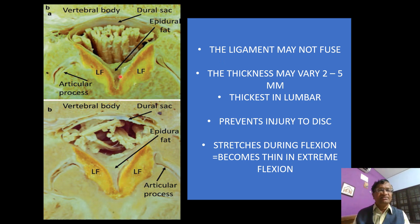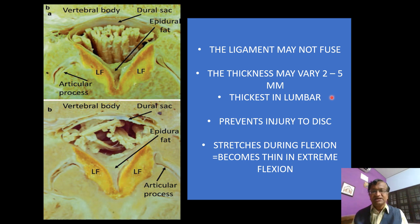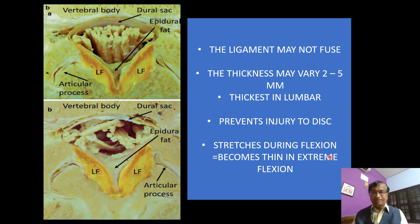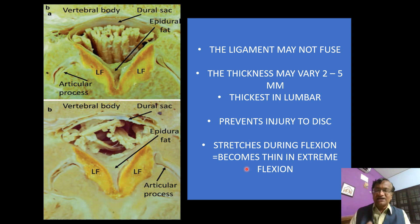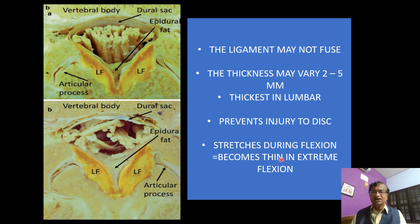The ligamentum flavum may not fuse completely — there may be a gap. Its thickness is two to five millimeters and it is thickest in the lumbar region. It prevents injury to the disc and stretches during flexion, becoming thin in extreme flexion. For spinal anesthesia, extreme flexion is acceptable, but for epidural, extreme flexion may make the ligamentum flavum thinner, increasing the risk of accidental dural puncture.